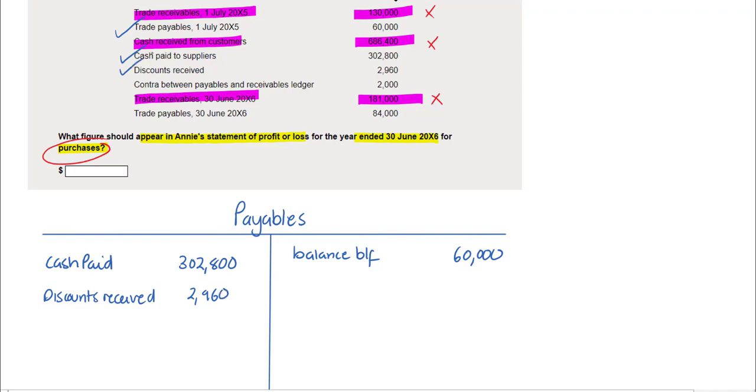We then have information about contras between payables and receivables. A contra entry will always reduce the payable and a receivable by the amount provided here. The amount is 2,000.